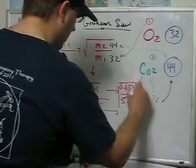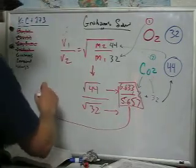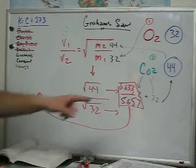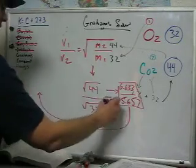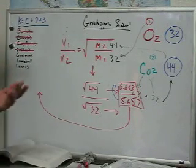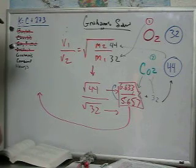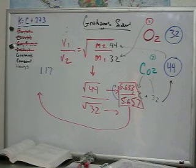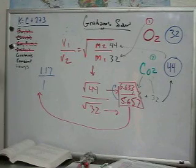So then what we do is we need to reduce this. I'm going to come over here and the way I reduce this just like we did in the first formula of hydrogen helium is I divide the bottom into the top. So 5.657 goes into 6.633 and I just type that into my calculator. I type 6.633 divided by 5.657 and what I should get is a number 1.17.